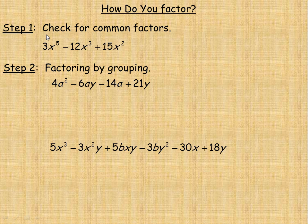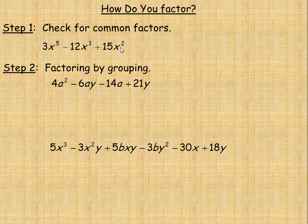Whenever you're factoring, the first thing you should always do is check for common factors — what divides evenly into all of the terms. In this first example we're factoring 3x to the fifth minus 12x cubed plus 15x squared. Well, 3 divides into each of those numbers evenly, so the common factor should have a 3 in it. And there are also powers of x in each of these; you can always factor out the lowest common power, which is x squared.